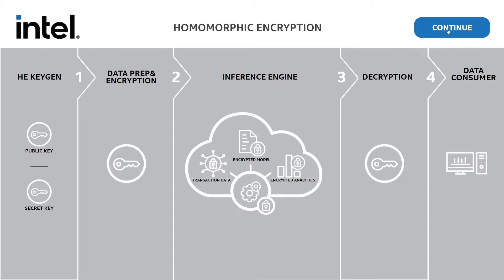Intel has made advances in accelerating homomorphic encryption using the 3rd generation Intel Xeon platform. This demo shows acceleration factors using the Intel Homomorphic Encryption Acceleration Library, also known as Intel HEXL. This use case performs secure home credit default risk predictions using private and confidential information about an individual's household.